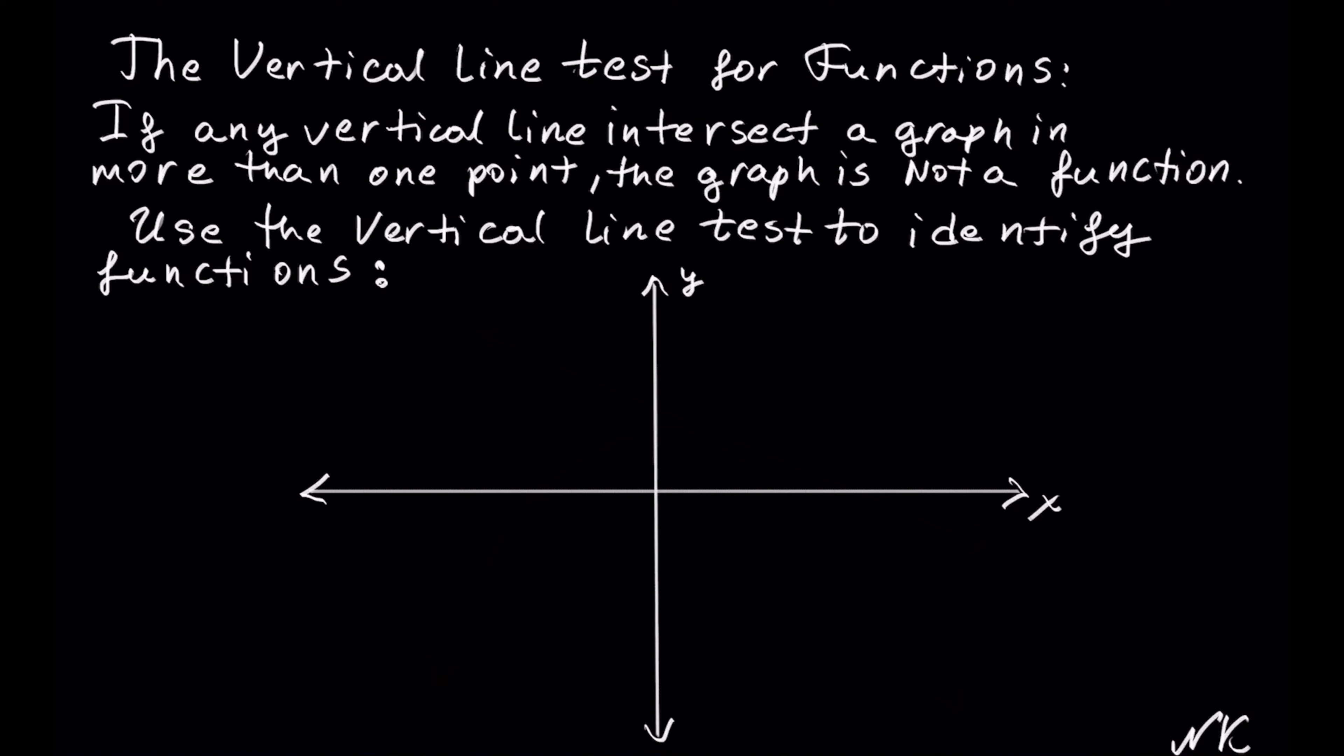The test is exactly how it sounds. We will test the graphs with vertical lines. In this example we have a slanted down graph. To check whether or not this is a function visually, just see whether or not you can draw a vertical line and have it cross this graph in more than one place.